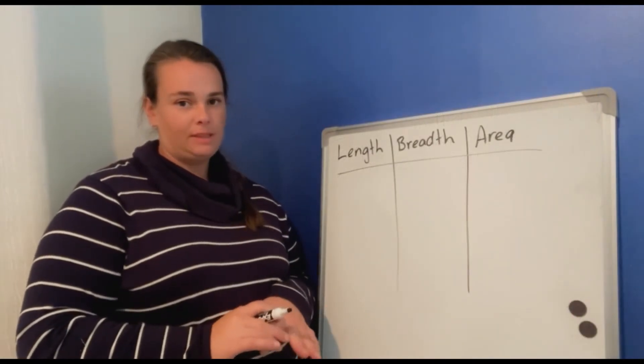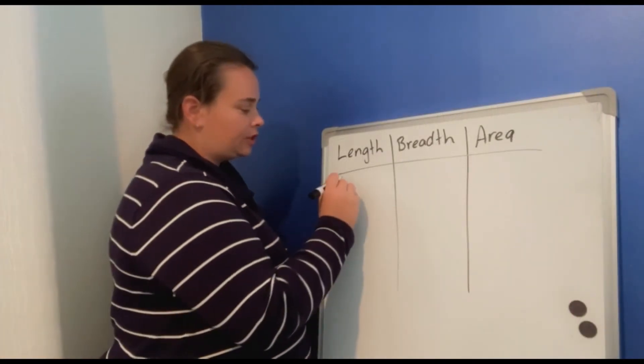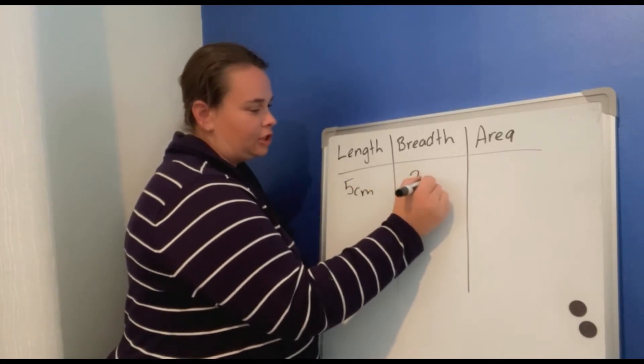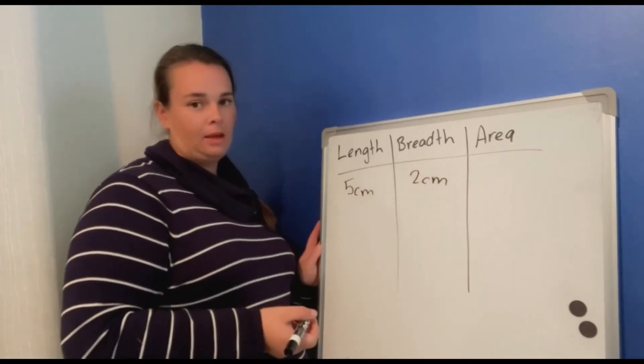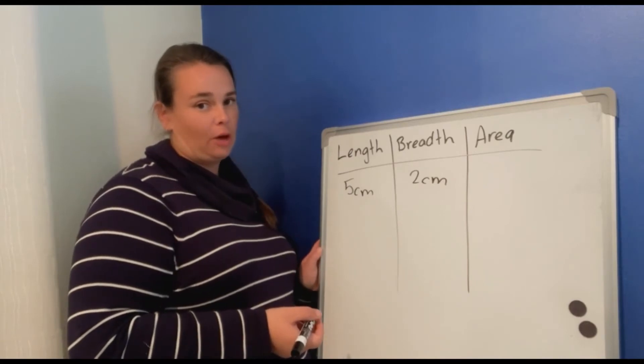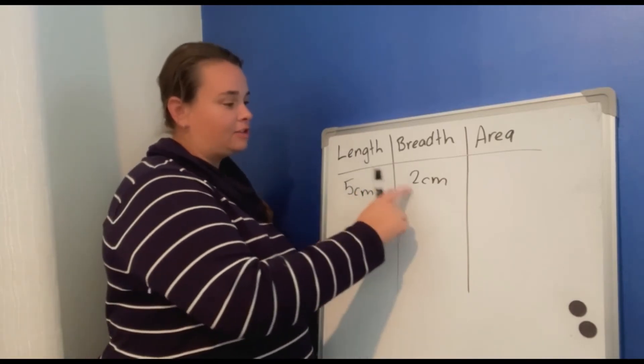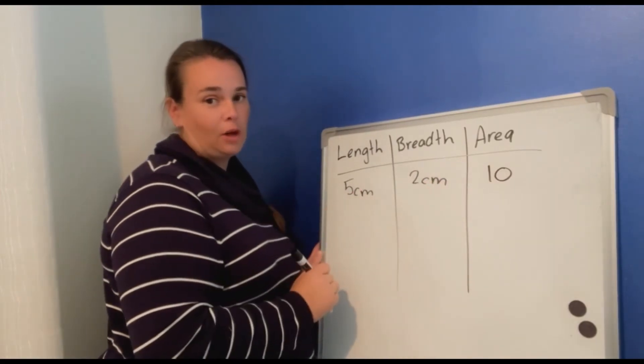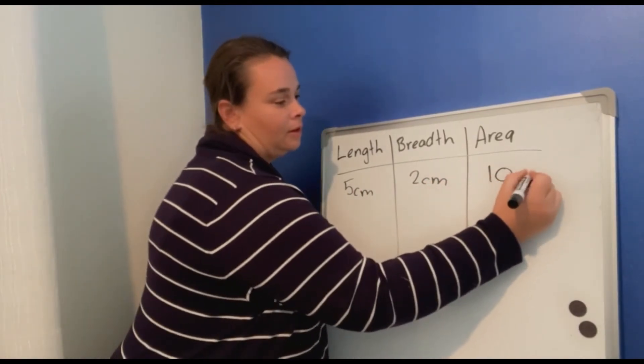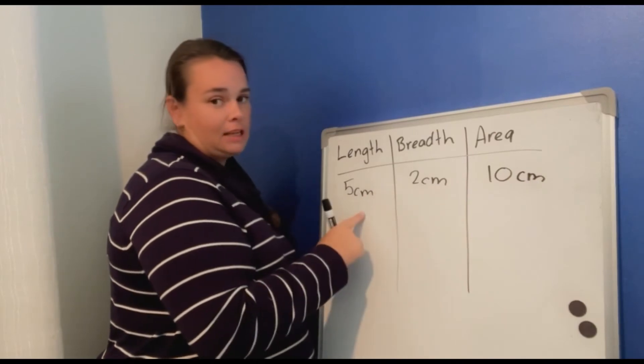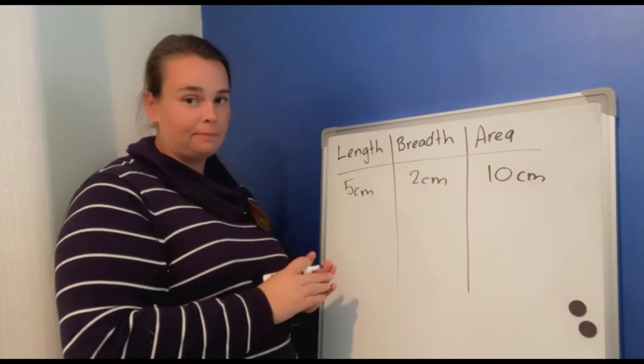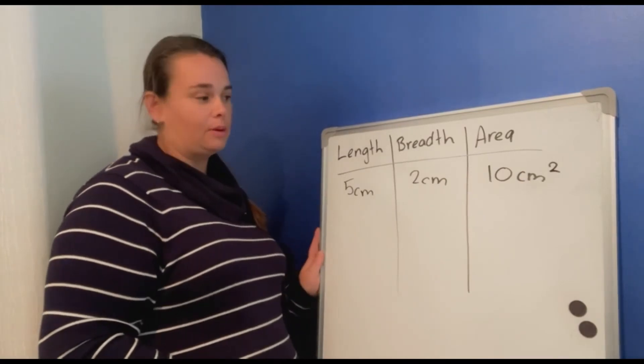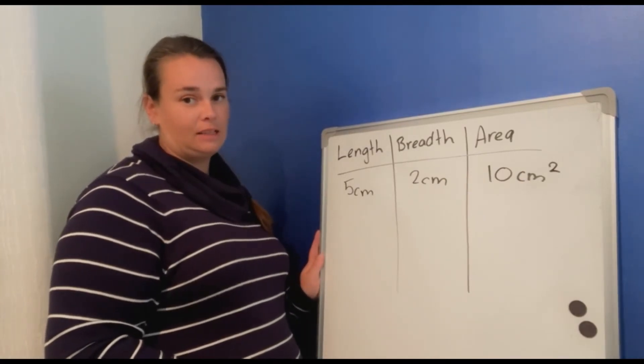Let's do some problems together now. So length is five centimeters, the breadth is two centimeters. How much is the area going to be? Five times two is ten. It's centimeters, so we need to write that. And because we have timesed it to work out the area, we need to add the little two on top. So it's ten centimeters squared.